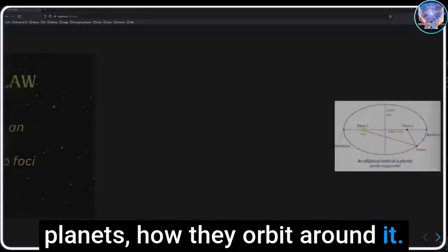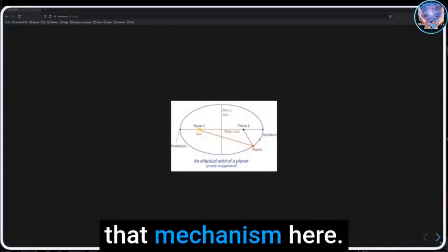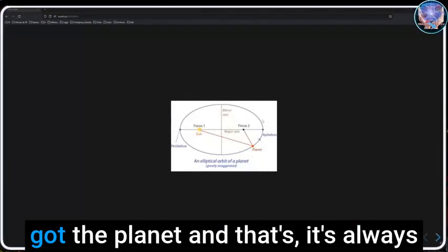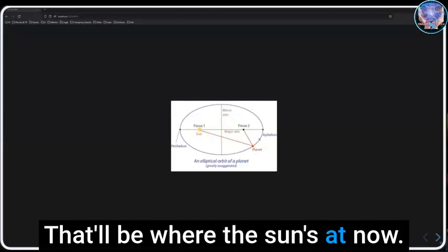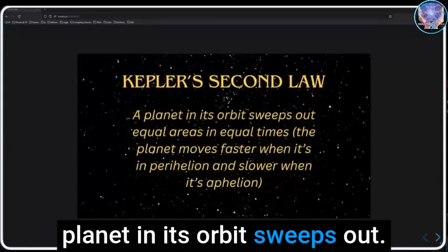So we discussed how the ellipse works, the geometry of it, where the sun would be, and then the planets and how they orbit around it. Here's a refresher on that mechanism. We got the sun and we got the planet, and it's always going to be at a focus point. That'll be where the sun's at.